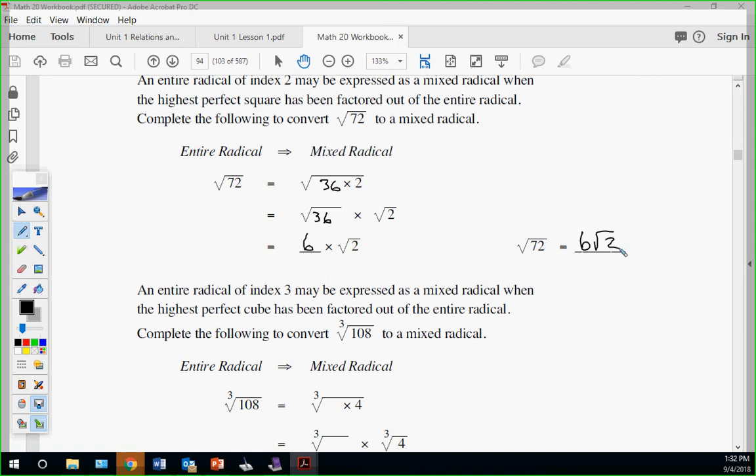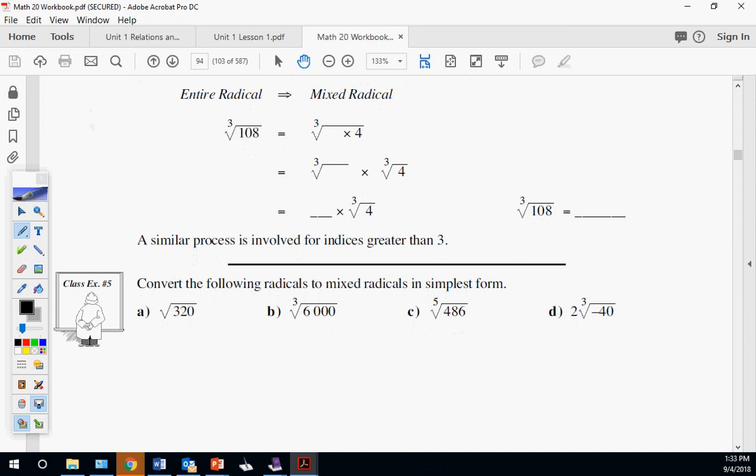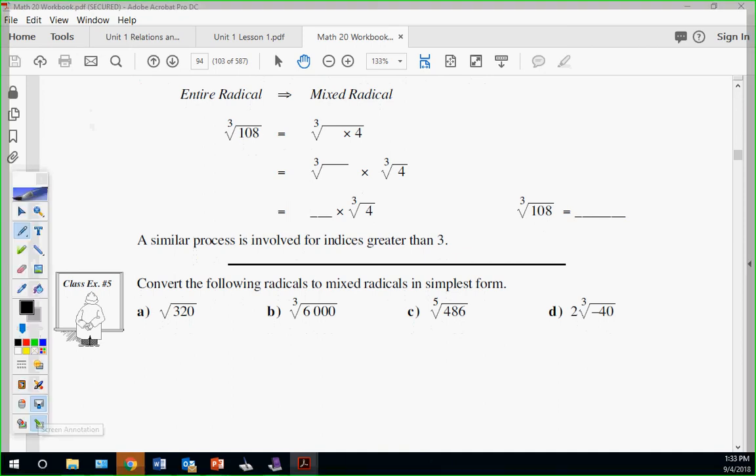Now cube root 108, going from entire to mixed. If you're feeling overwhelmed, today's a fast day. I won't always speed you through like this, but slow me down if you have questions. 108, breaking it down: 27 times 4. Good, we like 27, that's a perfect cube. Cube root 27 is 3. So cube root 108 to mixed is 3 cube root 4.